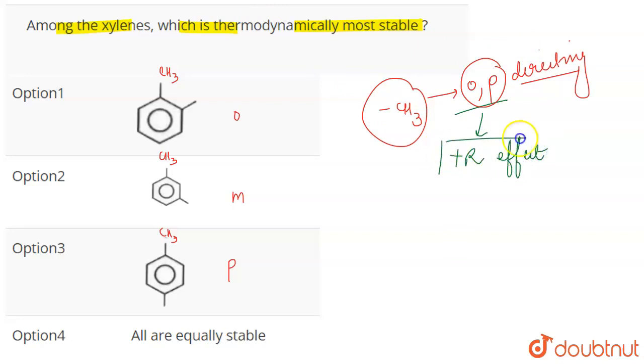So if we look at the resonating structures of para xylene - this is CH3, this is also CH3. This bond is going to shift here, so we are going to get this will be minus, a plus will be created here, a double bond, a double bond and a CH3.